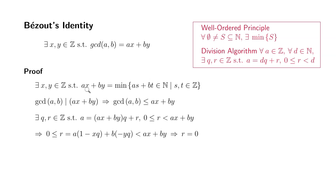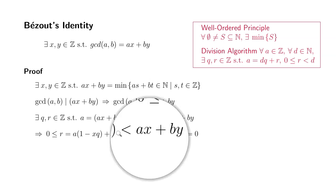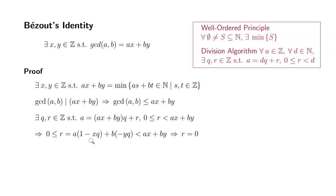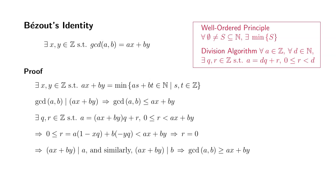But remember, ax plus by is supposed to be the smallest possible positive linear combination of a and b. So this expression cannot be positive, because otherwise you'd have found a smaller one — but ax plus by is the smallest. Therefore, r must equal 0. Once we know r is 0, and since r is the remainder, we know that the divisor ax plus by divides a.